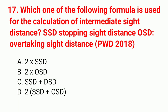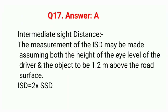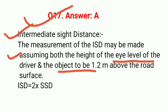Question 17: Which formula is used for calculation of intermediate sight distance (ISD)? Correct answer option A: 2 × SSD (stopping sight distance). The measurement of ISD assumes both the height of eye level of the driver and the object to be 1.2 m above the road surface. ISD formula = 2 × SSD.